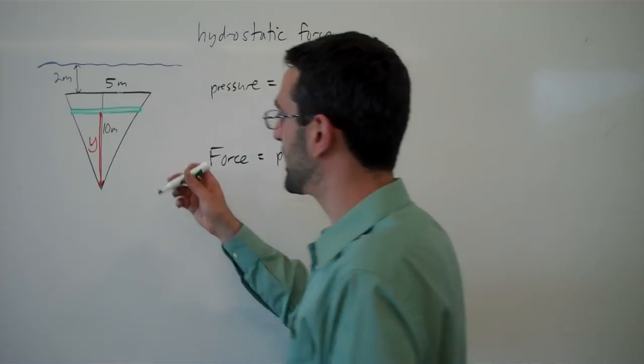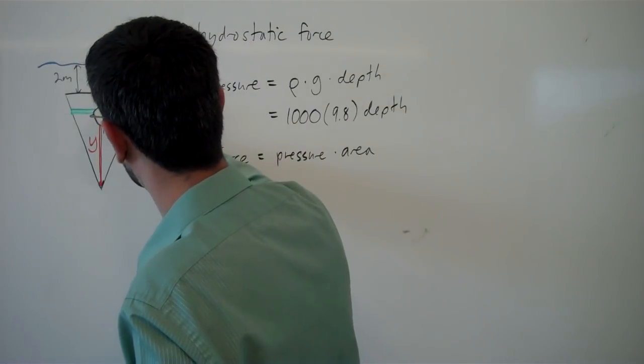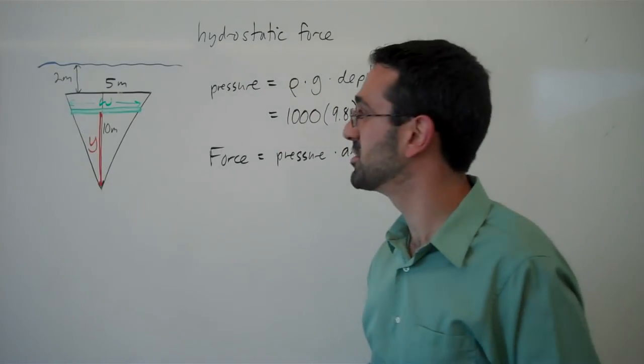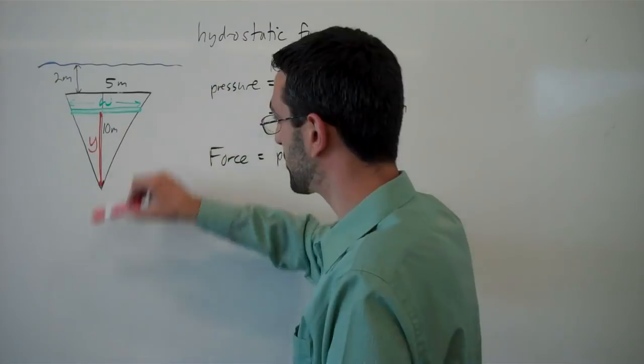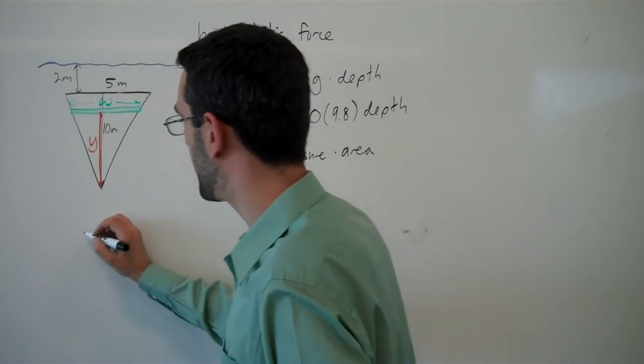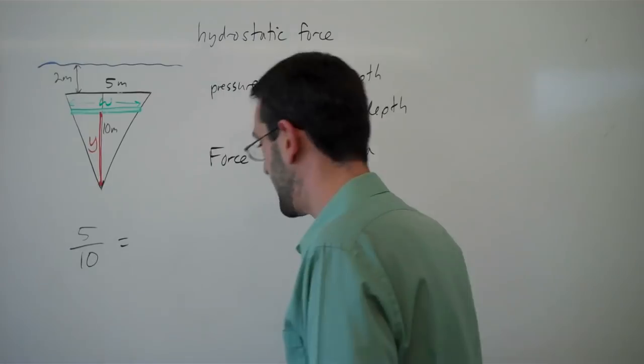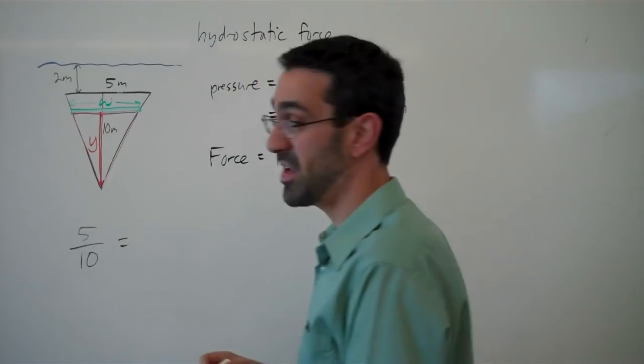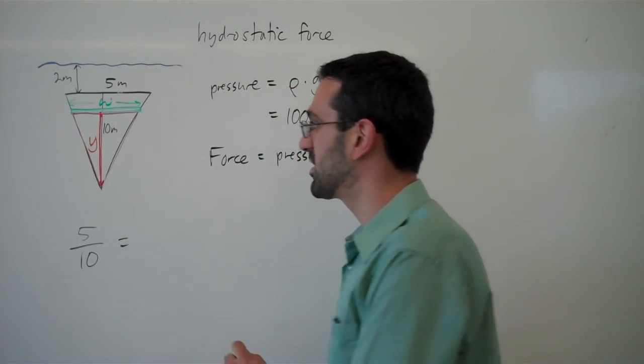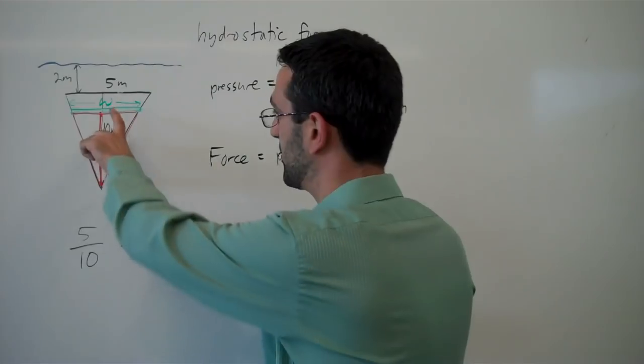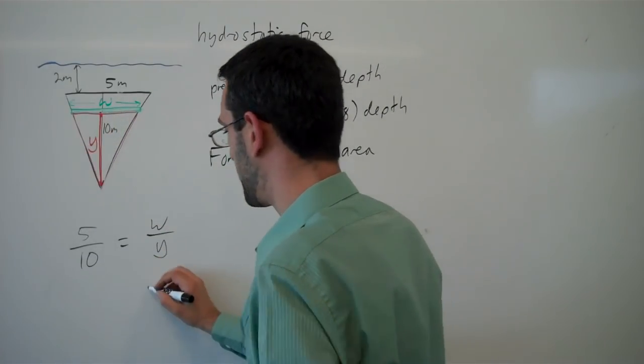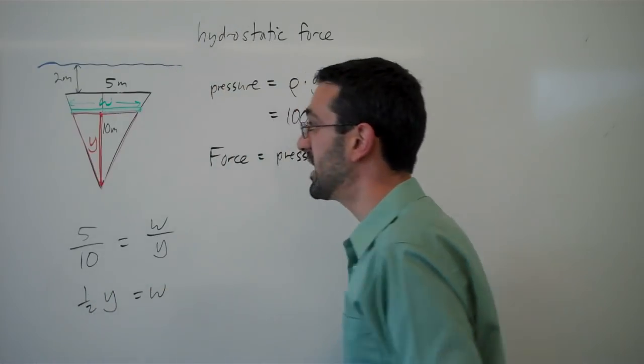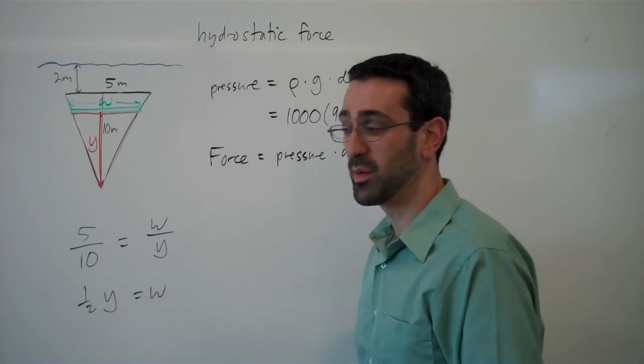I need to find the width of my slice here, and for that, I can turn to similar triangles. We have our large triangle with a width of 5 and a height of 10, and then we have this smaller triangle here with the same angles, with a width of w and a height of y. Solving for w, w equals one-half y, and now I know the width of my slice.